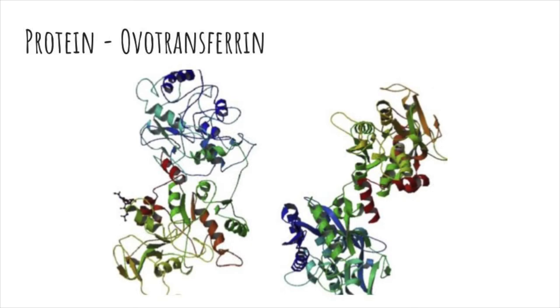Ovotransferrin is 13% of the egg and is made up of two phenylonic hydroxyl groups and a nitrogen acid. Its strong binding with iron inhibits the growth of microorganisms, including salmonella.